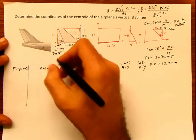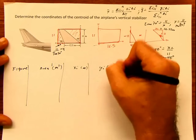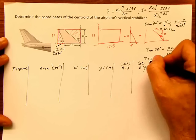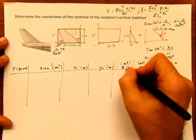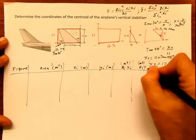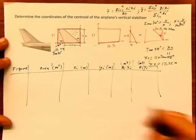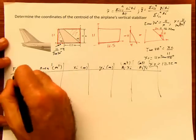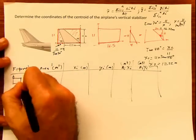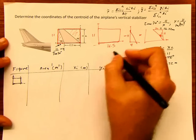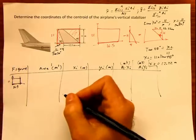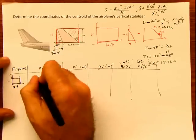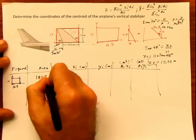Figure, area, x, y, ax, ay. A times x, and a times y. Our first figure, our first figure is this one. Remember, this is 11, 16.5. We can calculate the area, which is 11 times 16.5, and it's 181.5.